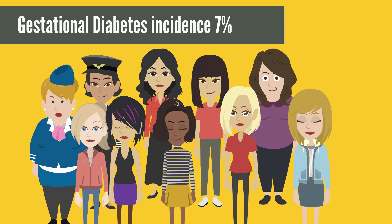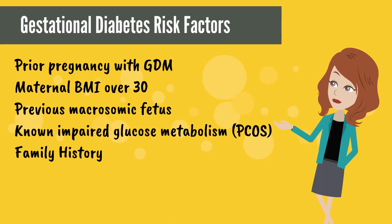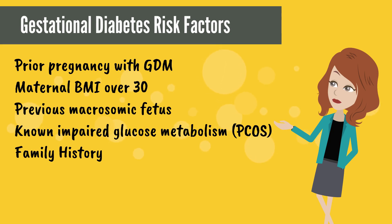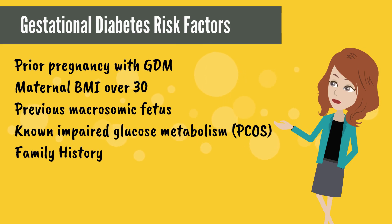There is variation between populations, with Hispanic and Asian women having the highest incidence and African American and Caucasian women having the lowest. Major risk factors for developing gestational diabetes include prior pregnancy complicated by gestational diabetes, maternal BMI over 30, previous macrosomic fetus, known impaired glucose metabolism such as polycystic ovarian syndrome or PCOS, and family history. Pregnancy may actually unmask a genetic predisposition to type 2 diabetes, which may be why women who develop gestational diabetes are at increased risk for developing overt type 2 diabetes later in life.